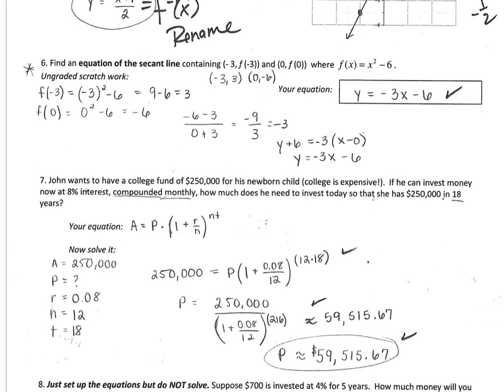A secant line is just asking you to find the line that crosses the curve in two different places. Negative 3 and 0 are the x values. Go find the y's; that's what the student did here. Then to get the equation of a line, you just need the slope. You should probably label that. This is not labeled either. Some students use y equals mx plus b and found the b. Either way is fine.